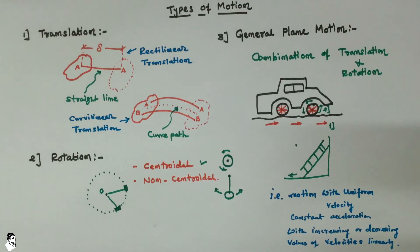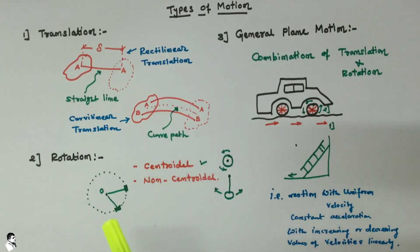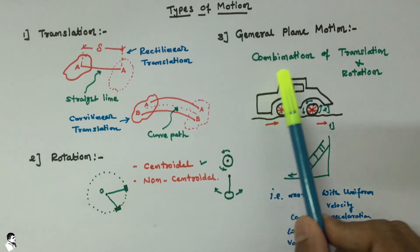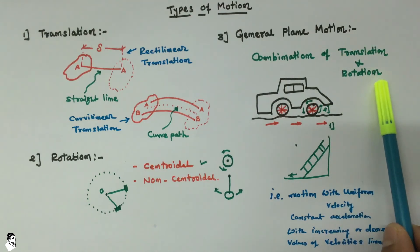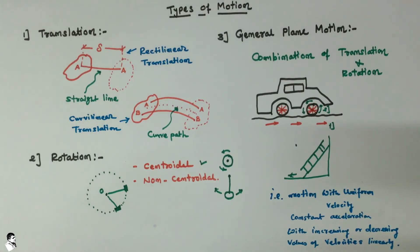There are many things related to the types of motion, but the important ones are: the study of translation with rectilinear and curvilinear translation, the study of centroidal rotation as well as non-centroidal rotational motion, and the third one — general plane motion — which is a combination of both translation and rotation, along with important points related to velocity and acceleration. This is all about the types of motion.